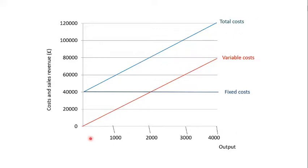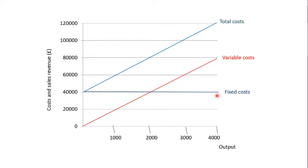Looking at the diagram, output is along the horizontal axis at the bottom — the number of cakes being made — and costs and sales revenue go up the vertical axis. The fixed costs are always a straight horizontal line at £40,000, regardless of output. Whether I'm making zero cakes or 4,000 cakes, fixed costs remain constant — which is why they appear as a constant horizontal line on the chart.